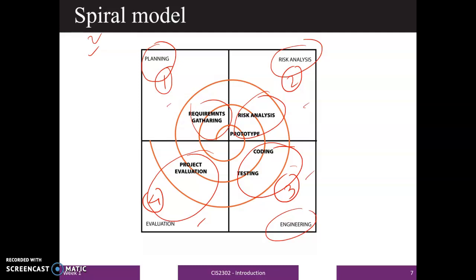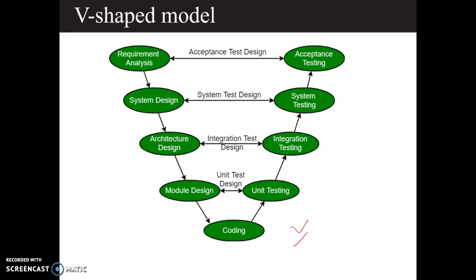The next model is the V-shaped model, which has gained popularity over the last couple of years. Most software developers are using this V-shaped model because it allows testing at each phase — requirement analysis testing, system design testing, architecture design testing, module design testing, and finally coding. The probability of success is very high in the case of the V-shaped model.